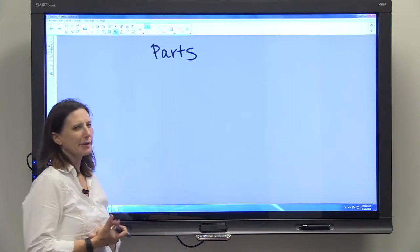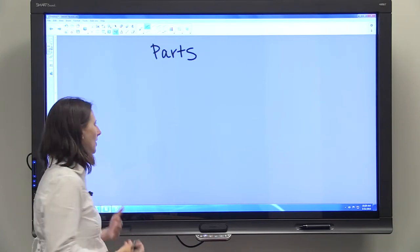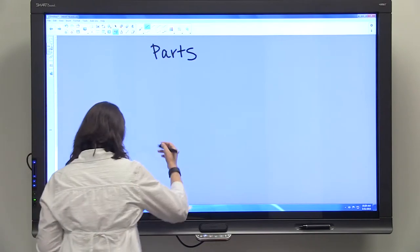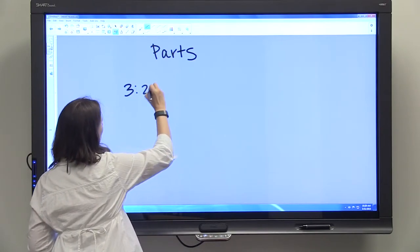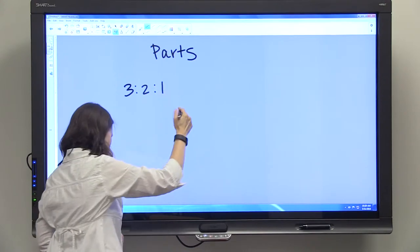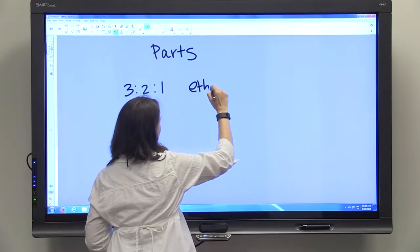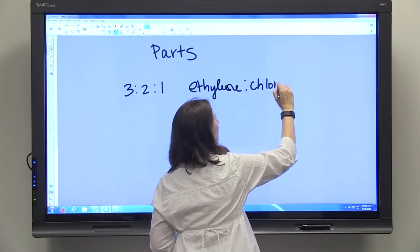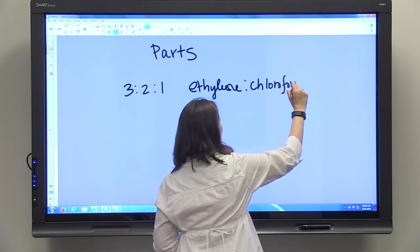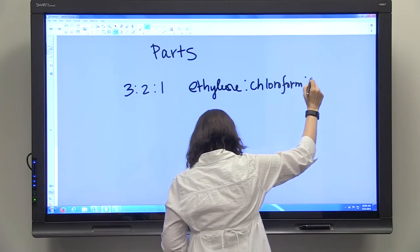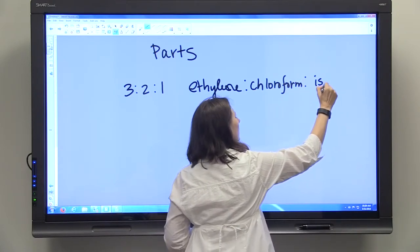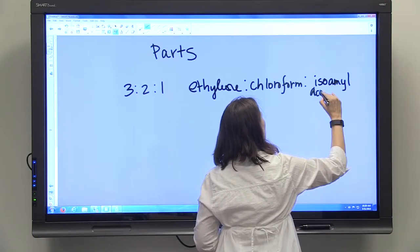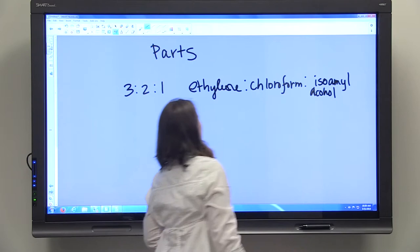It's expressed less often this way in the lab, but we just want to be familiar with it so we understand. We might see 3 to 2 to 1 ethylene to chloroform to isoamyl alcohol, and that tells